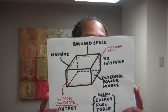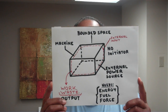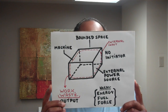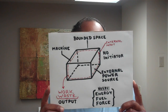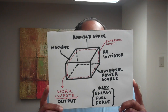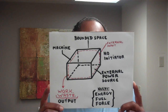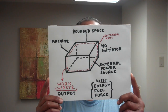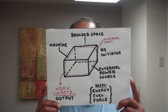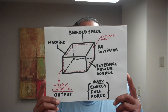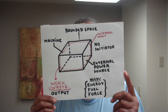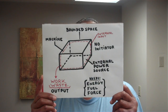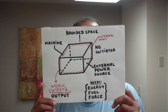Category B machines: the black box represents a bounded space that encloses the machine. Within the bounded space is the machine, drawn in red. The power source for all Category B machines is external, not internal, to the bounded space. These Category B Type 1 machines — the only type — produce a force or energy to do work. They have no initiator. These machines require energy, fuel, force, or fields external to the bounded space to continue operating. Examples of Category B machines include automobiles, stoves, and airplanes — in other words, 98 to 99% of all known machines are Category B machines.